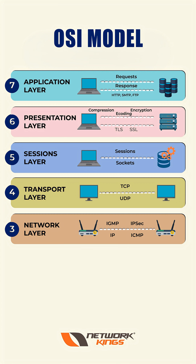In the network layer, routers and Layer 3 switches work here. Protocols like ICMP and IPsec all work here, and IPv4 and IPv6 addresses are added at the network layer.